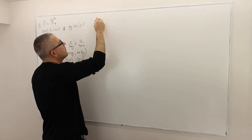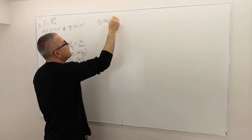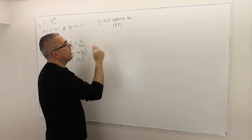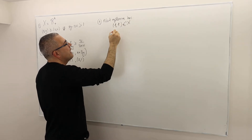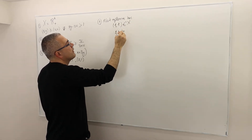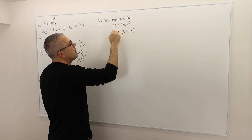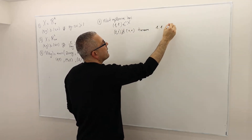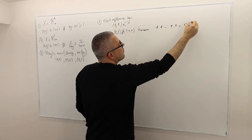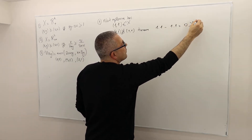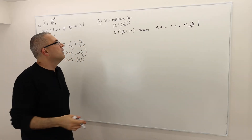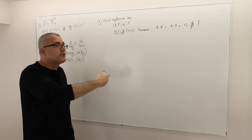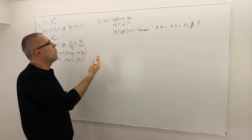It is not reflexive because — think of (1, 1). It's in the set. And (1, 1) is not at least as good as (1, 1) because 1 times 1 minus 1 times 1 is equal to 0, which is not greater than or equal to 1. So that's a counter-example which proves that reflexivity does not hold in this case.